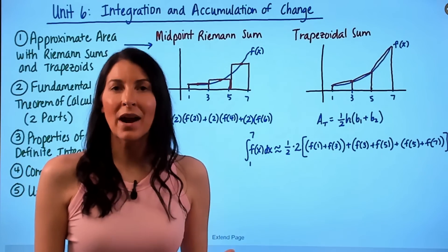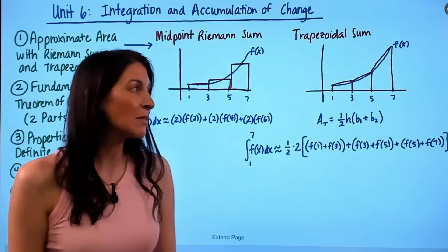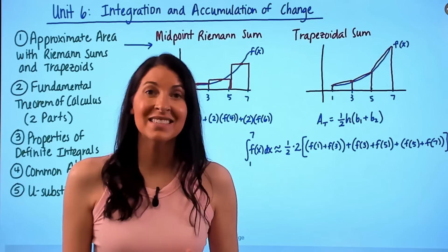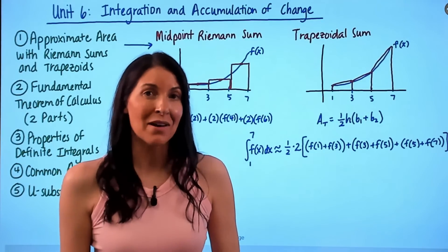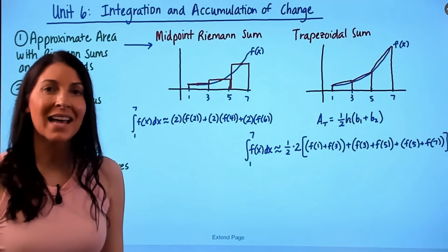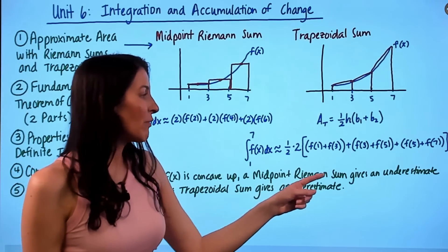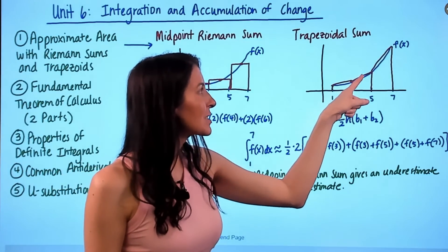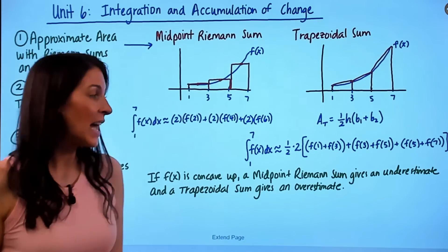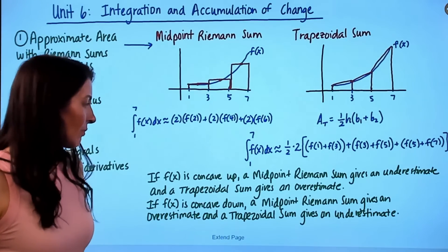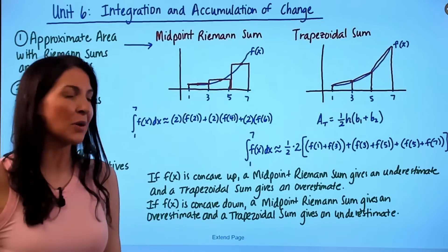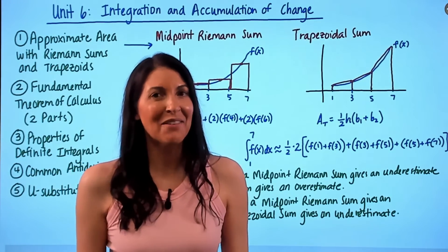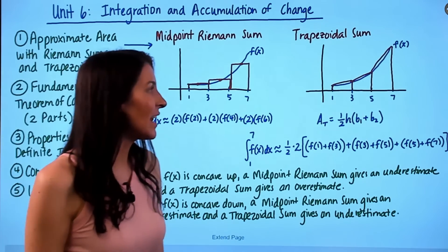Just like left and right Riemann sums have over/under approximation rules, midpoint Riemann sums and trapezoidal sums do too — except this time it depends on the concavity of f(x), not whether it's increasing or decreasing. If f(x) is concave up, a midpoint Riemann sum gives an underestimate while a trapezoidal sum gives a slight overestimate. If f(x) is concave down, it's reversed: midpoint gives an overestimate and the trapezoidal sum gives an underestimate.